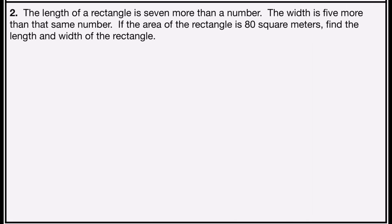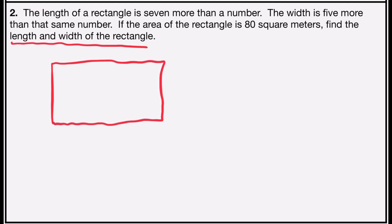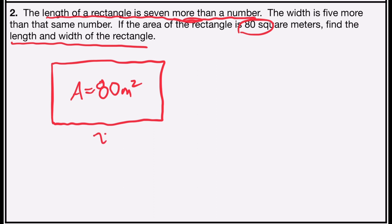Problem number two says the length of a rectangle is 7 more than a number. The width is 5 more than that same number. If the area of the rectangle is 80 square meters, find the length and the width. I'm going to draw a figure — the area is 80 square meters. The length is x plus 7 since it's 7 more than x, and 'more than' means addition, so the width expression is x plus 5.